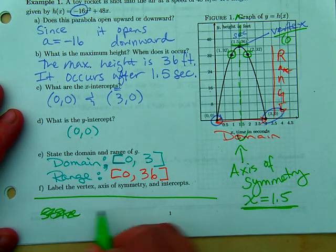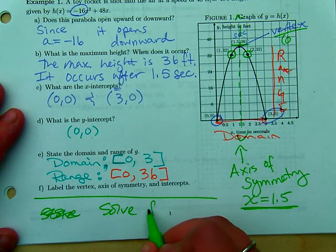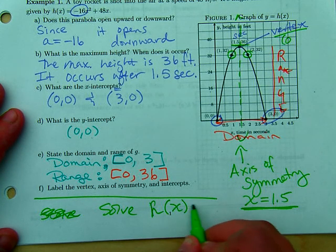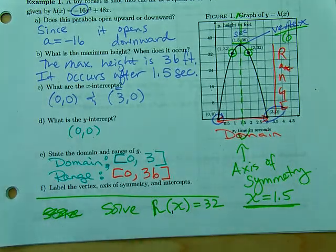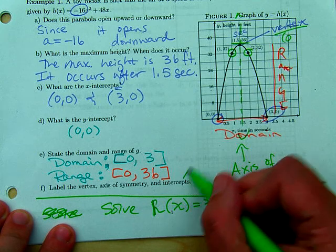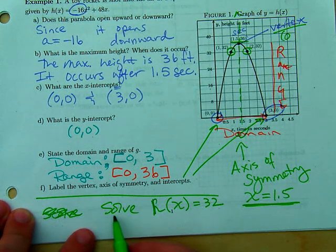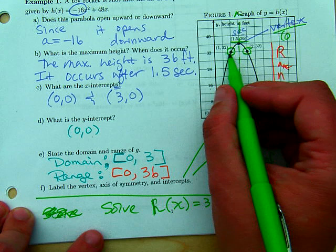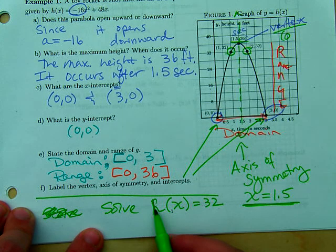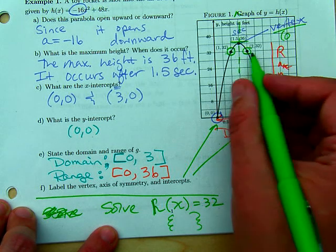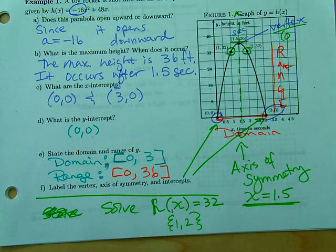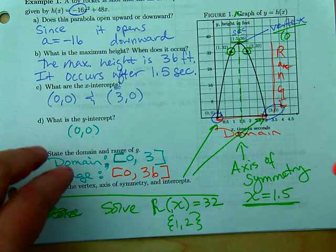If I were to ask you at what time did the rocket reach a height of 32, solve h of x equals 32. You would say 1 and 2. That would mean that after one second and at two seconds, the rocket is at a height of 32. Questions? Concerns?